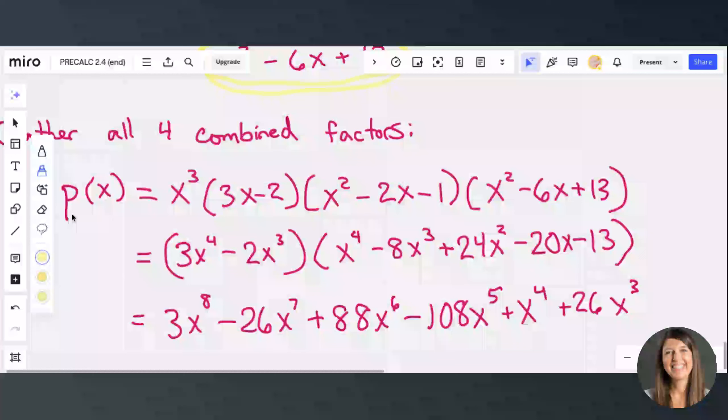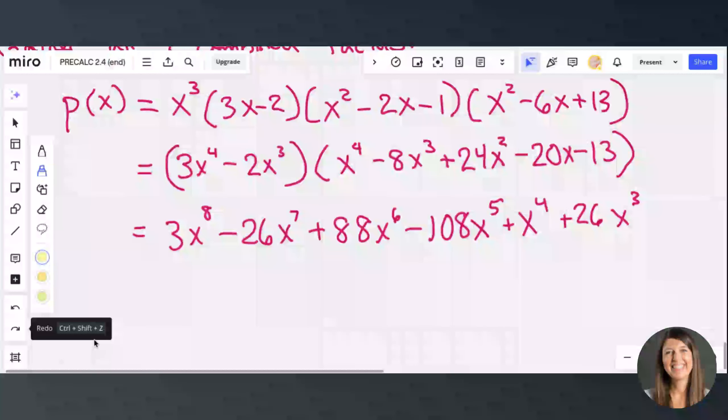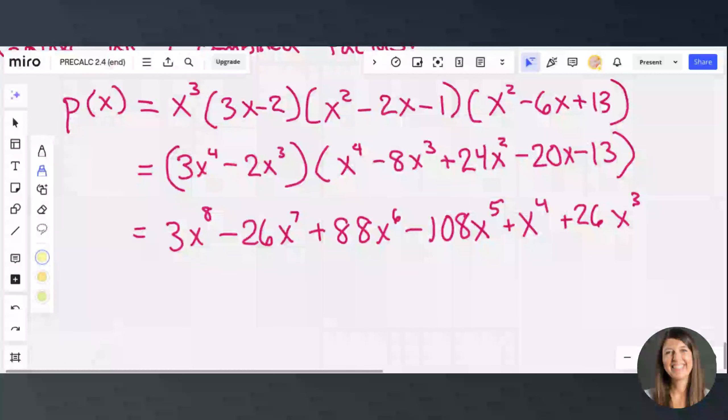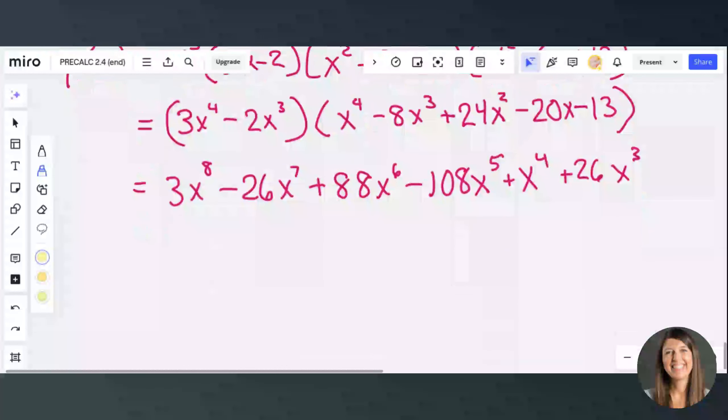And then we've got to do some distributing. And hopefully you can keep track of your like terms and add them up, but then we get this crazy polynomial. It has degree 8. And that makes sense because we had a lot of roots and we had conjugate roots and we had multiplicity and all sorts of things happening here. So we would expect a high degree for this. That's all I got.